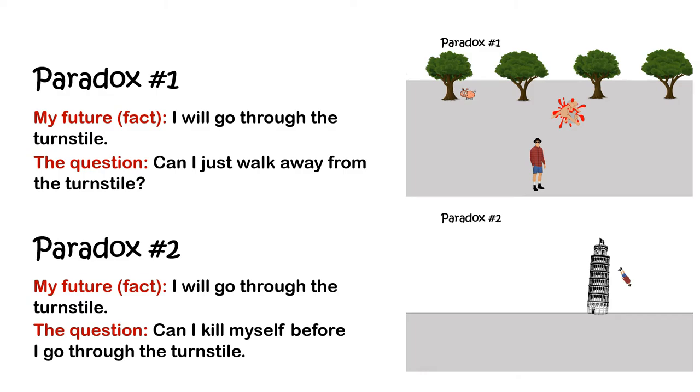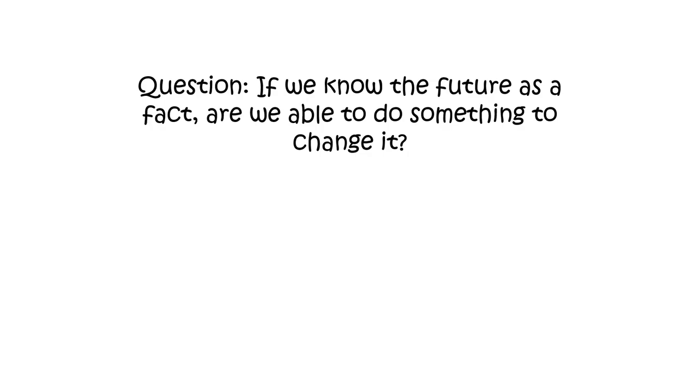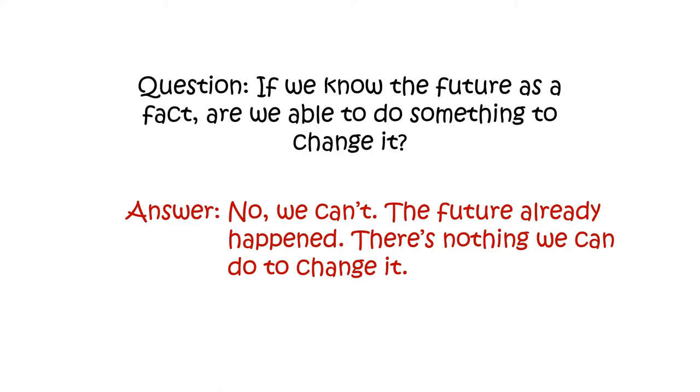This question pretty much describes those two paradoxes we saw earlier. In the first paradox, we saw there's an inverted version of me, so we know as a fact that in the future I will go through the turnstile. And the question is, can I just walk away from the turnstile? In the second paradox we have the same fact, which is I will go through the turnstile in the future, and the question is, can I kill myself before I go through that turnstile? And the correct answer to this type of question is no, we can't.